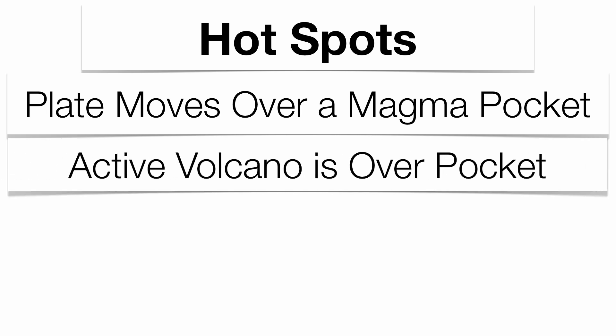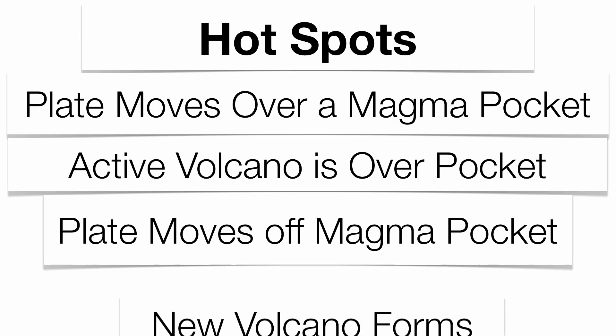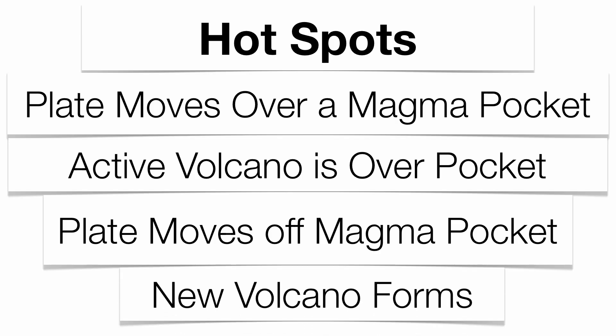You tend to have a very active volcano over top of the magma pocket. As the plate moves, the active volcano moves with it, and that volcano becomes inactive as the plate moves off the magma pocket. A new volcano will pop up behind the inactive one, and this happens over and over again. You get a string of volcanoes where the only active one is the one over top of the magma pocket — that's essentially what a hotspot is.